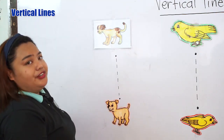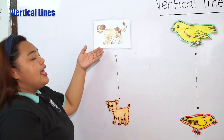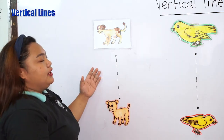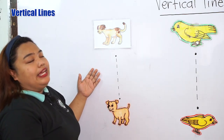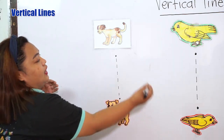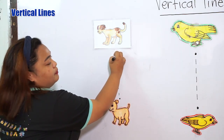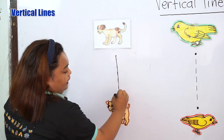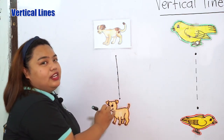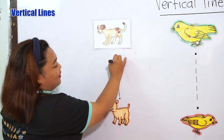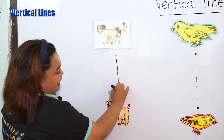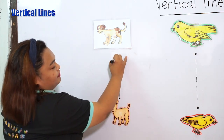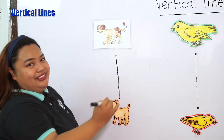First, let's help the dog find the puppy by tracing the broken lines. Okay — up, going down. Again, once again — up, going down. Up, going down.